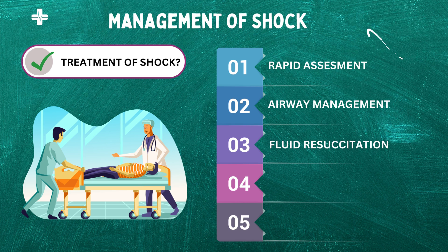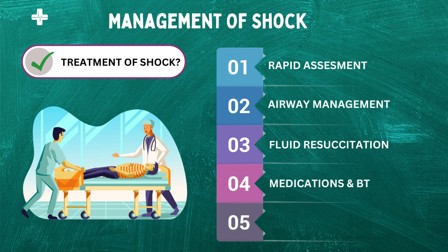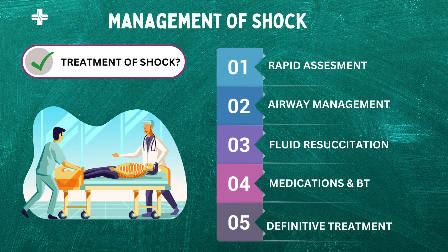Next, medications: some medications may be administered to help increase blood pressure and improve cardiac function. Next, blood transfusion: in cases of severe bleeding, blood transfusion may be necessary to restore blood volume. Lastly, definitive treatment: once the patient is stabilized, definitive treatment for the underlying cause of shock should be administered.